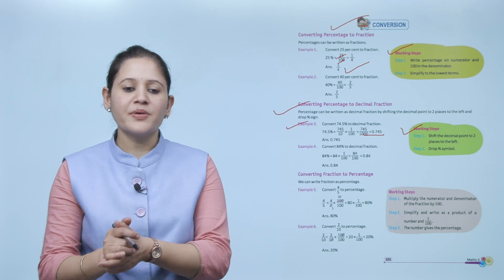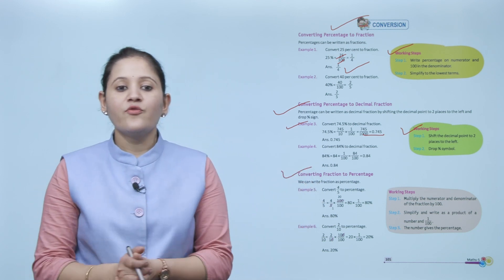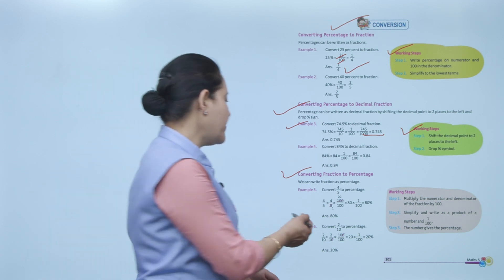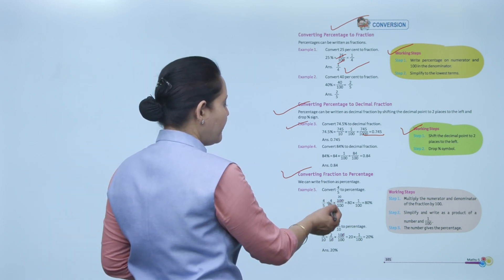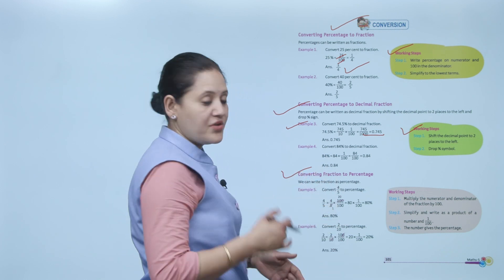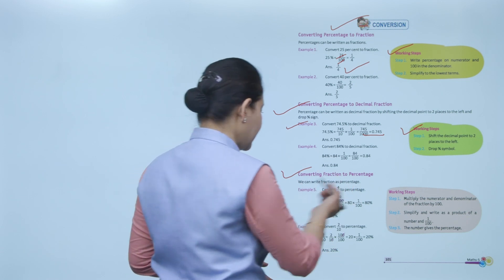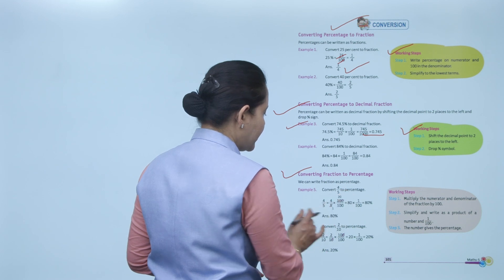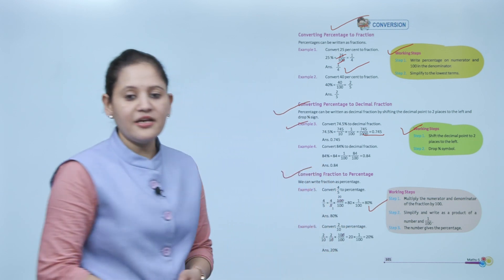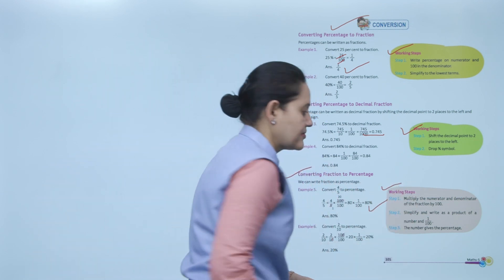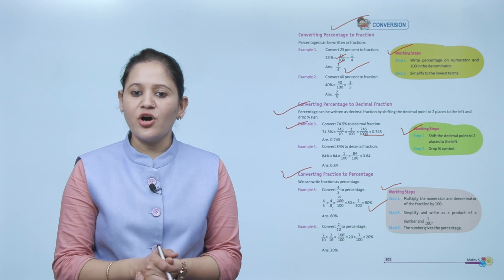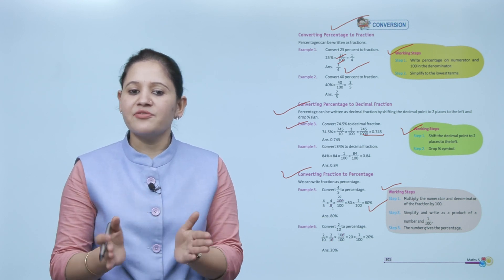Converting fraction to percentage: we can write a fraction as a percentage. For example, convert 4/5 to percentage. Multiply both numerator and denominator by 100: (4/5) × (100/100). Simplify — 100 divided by 5 is 20, 20 times 4 is 80, giving 80/100, which is 80%. Working steps: multiply numerator and denominator by 100, simplify, and write as a product — the number over 100 gives the percentage.